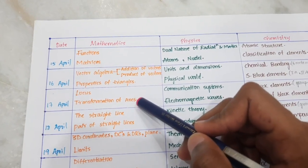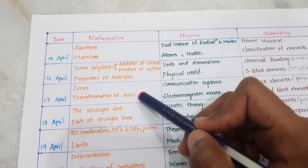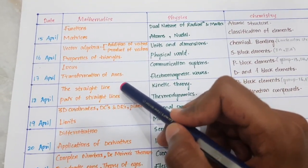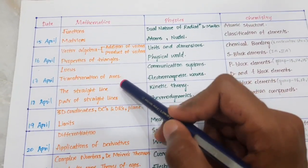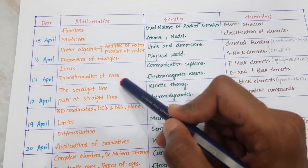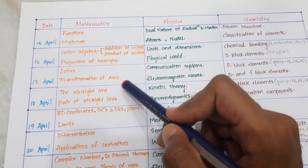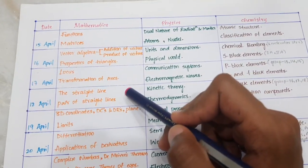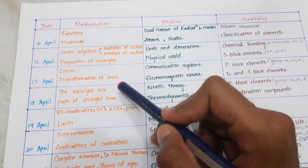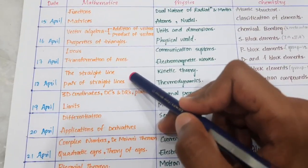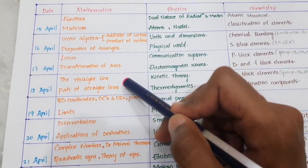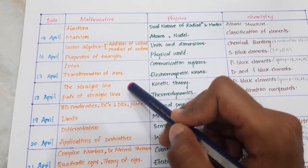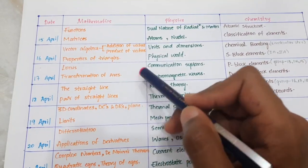Next: Straight Lines — normal forms, symmetric forms, reduction into various forms, intersection of two straight lines, family of straight lines, concurrent lines, condition for angle between lines, length of perpendicular from a point to a line, and distance between two lines. Then Pair of Straight Lines: equation of pair of straight lines passing through the origin, angle between pair of straight lines, conditions for perpendicular and coincident lines, and bisector of angles.